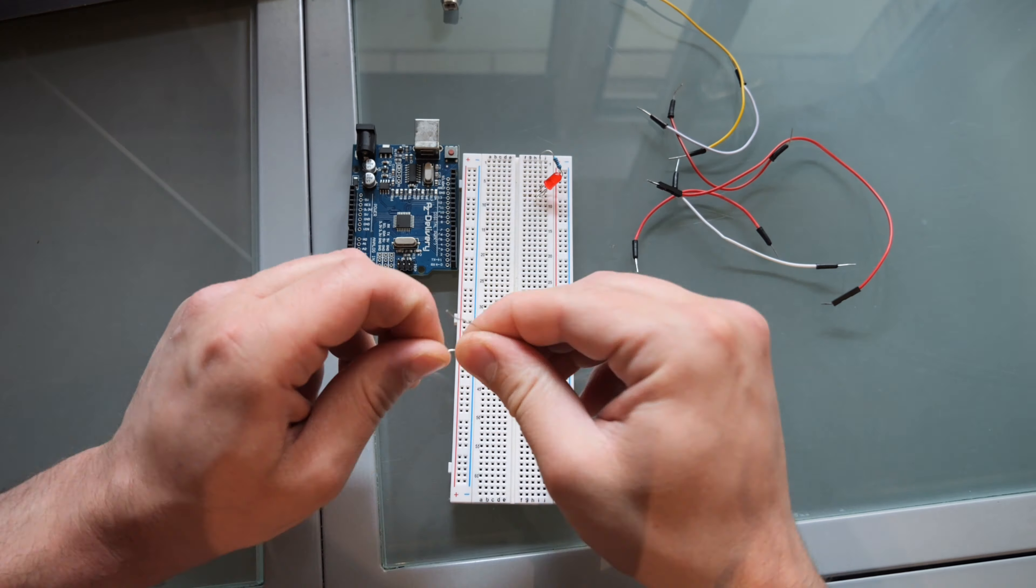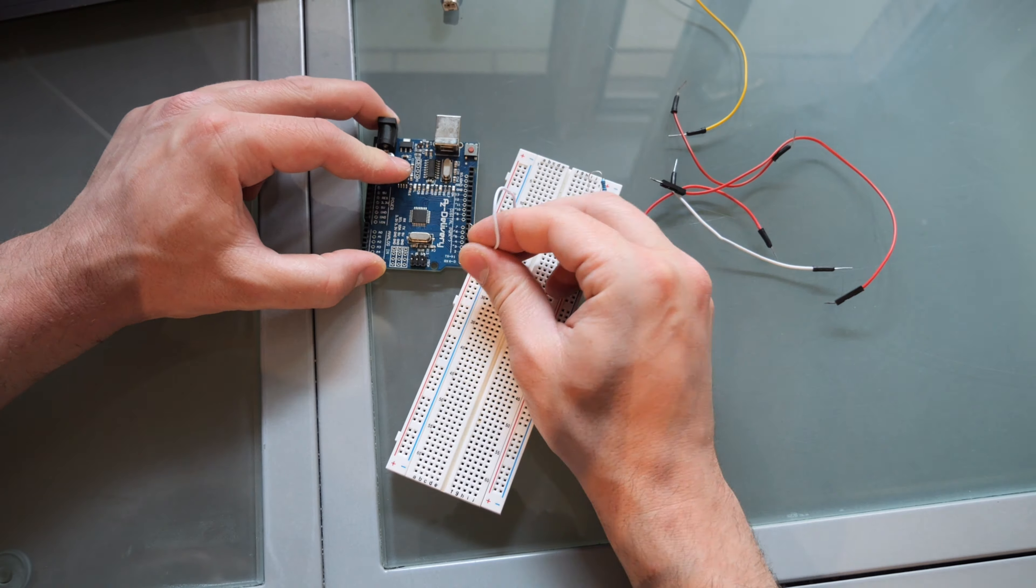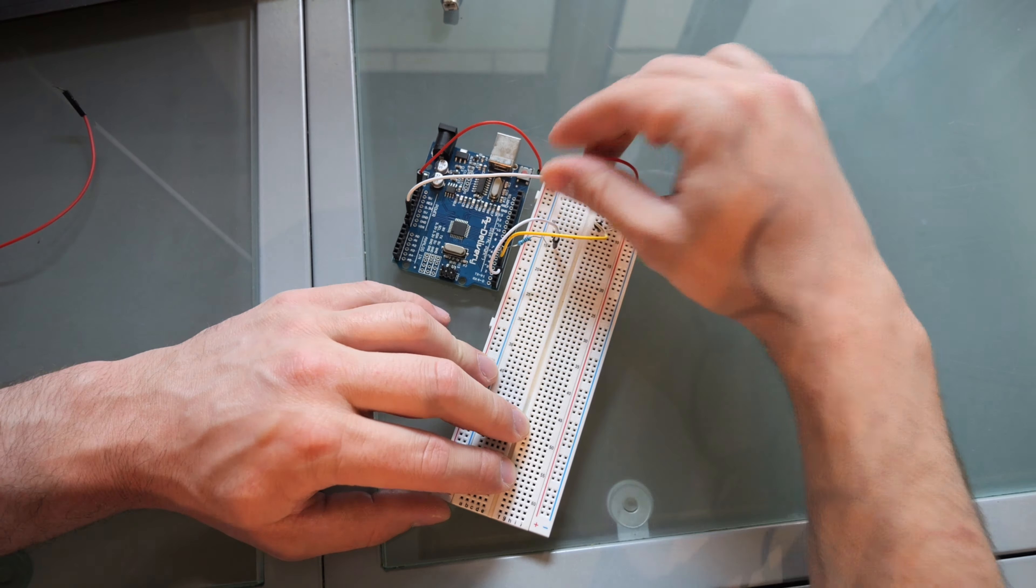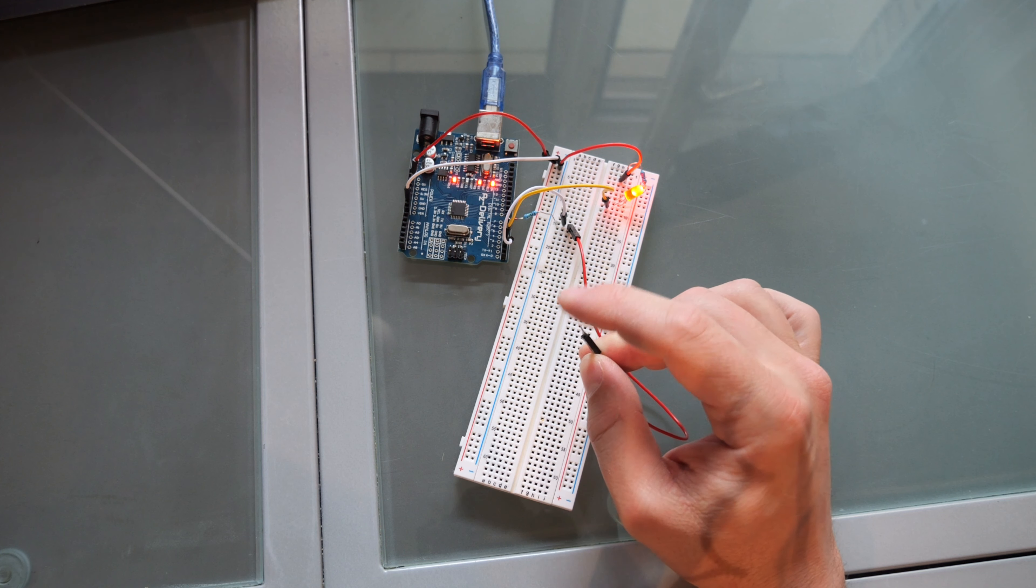To avoid having to attach an unsightly switch to the outside of the housing, I decided to use a touch sensor. So first I put together a test circuit on the breadboard to turn an LED on and off by touching the wire.